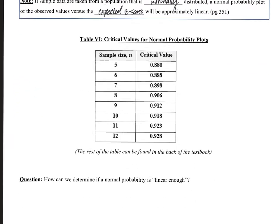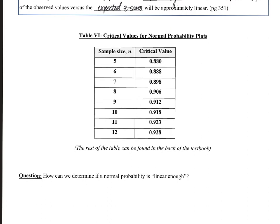Now let's look at a small excerpt of Table 4, which contains the critical values for a normal probability plot. This table is in the back of your textbook or available in the online version. The rest of the table with additional columns can also be found in the back of the textbook.